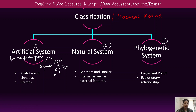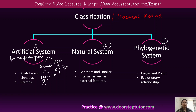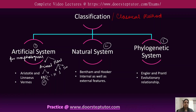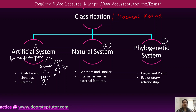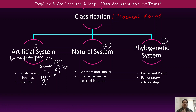In the case of animals, they were classified on the basis of whether RBCs are present or absent. This system was used by Aristotle and Linnaeus, and it has many drawbacks because they considered only a few or even just one morphological characteristic for the classification of organisms.